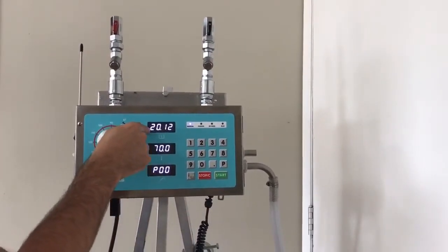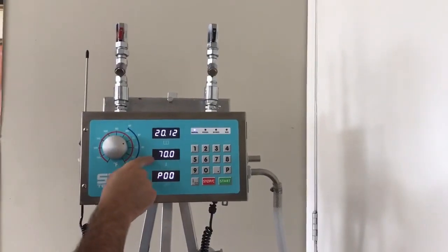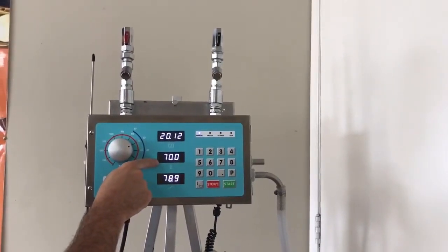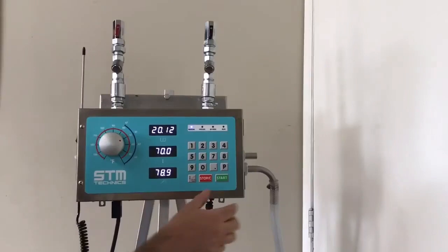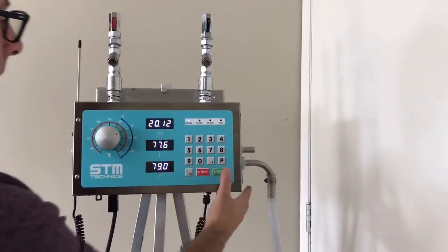So our quantity is 20 pounds, 12 ounces. Water temperature is 70 degrees Fahrenheit. And we're going to press start to dispense.